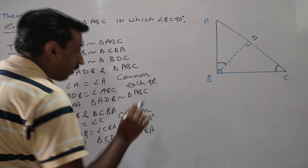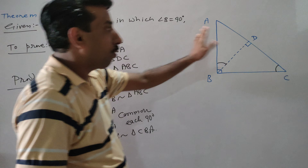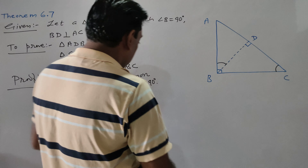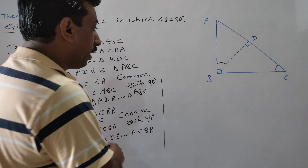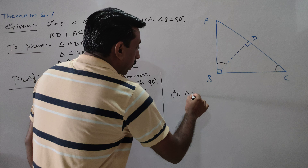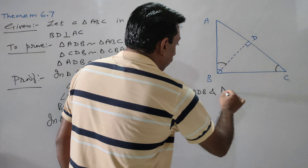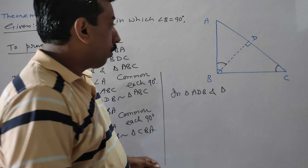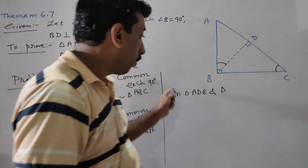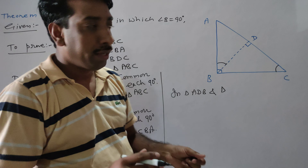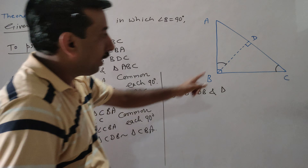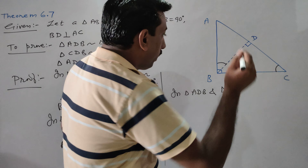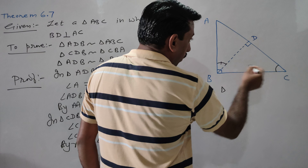These two triangles are similar. Now these two triangles are similar based on corresponding parts. We can see that triangle CDB is similar to triangle CDA. The first part angle is equal to one angle, and the other angle is equal to the other angle.